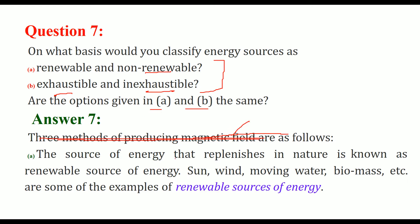A source of energy that replenishes in nature is known as a renewable source of energy — like the sun, the wind, moving water, and biomass. These are examples of renewable sources of energy because they will come again and again and are always there for us.